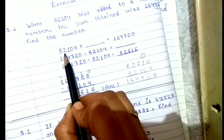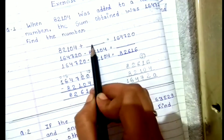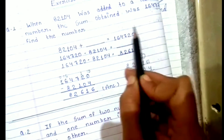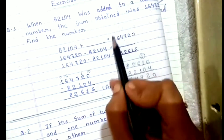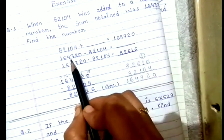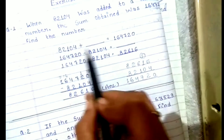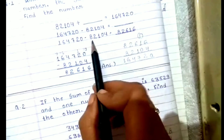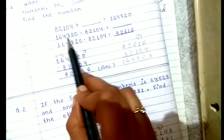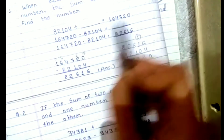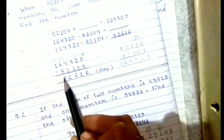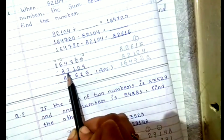कि उनका एक addend दिया हुआ है, ये missing addend है, इसको find करना है, तो क्या करेंगे? उसके sum में से, जो उसका total है, उसमें से जो first addend है, उसको minus कर देंगे। तो अपनने यहां यही किया है कि उसका sum जो उन्होंने दिया है, उसमें से first addend को minus कर दिया है।